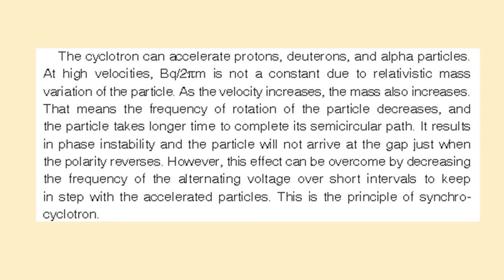The cyclotron can accelerate protons, deuterons, and alpha particles. At high velocities, BQ/2πM is not constant due to the relativistic mass variation of the particle. When velocity increases, mass M also increases, so the frequency of rotation decreases. The particle takes longer to complete its semicircular path, resulting in phase instability — the particle does not arrive at the gap just when the polarity reverses. This effect can be overcome by decreasing the frequency of the alternating voltage in steps to keep in step with the accelerating particles. This is the principle of the synchro-cyclotron.